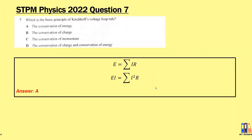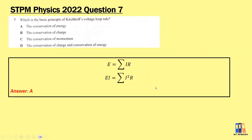Let's look at a question from 2022, question 7: what is the basic principle of the Kirchhoff voltage loop rule? The answer is A — conservation of energy, as discussed.